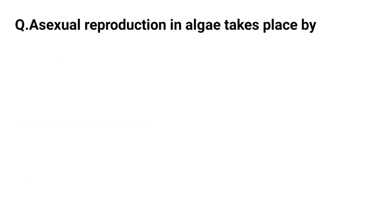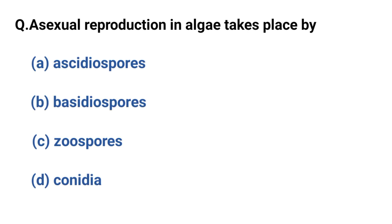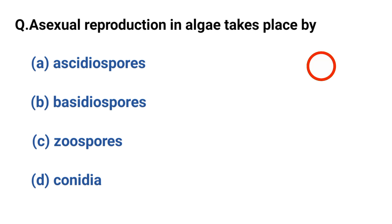Sexual reproduction in algae takes place by. Correct option is option C: Zoo spores.